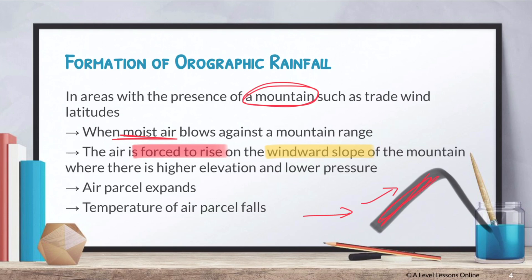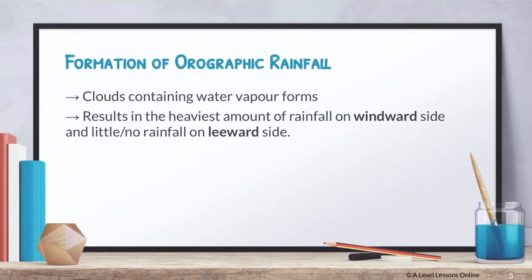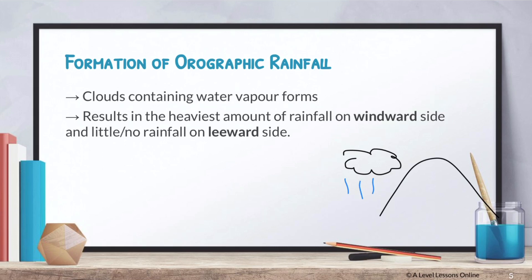On the windward side, an air parcel is forced to rise as it goes uphill. As the air parcel expands and rises, the temperature of the air parcel falls. The clouds, which contain water vapor brought by the trade winds - especially from the ocean - will actually start to form. You'll see little clouds beginning to form along the windward side of the slope, and this is what brings the rain.